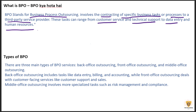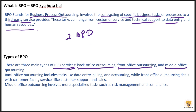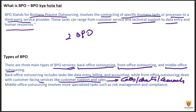There are three main types of BPO services: back-office outsourcing, front-office outsourcing, and middle-office outsourcing. In back-office, there are data entry, billing, and accounting. In front-office, there are customer-facing services like customer service, support, and sales — calls, chats, and emails. Middle-office outsourcing involves more specialized tasks such as risk management and compliance.